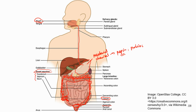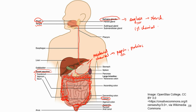Now let's look at the accessory digestive organs. A few are associated with the oral cavity. The teeth perform mechanical breakdown. The tongue is a large piece of skeletal muscle that helps mix food in the mouth with saliva. We also have salivary glands that deliver saliva into the oral cavity. Saliva contains the digestive enzyme amylase, which digests starch. So chemical digestion actually begins in the mouth — that's the first location for chemical digestion.